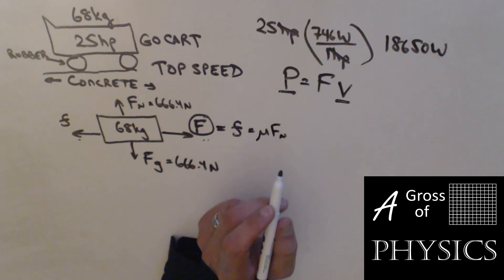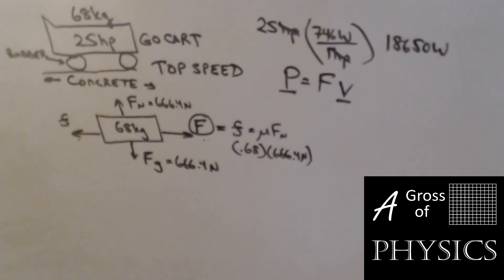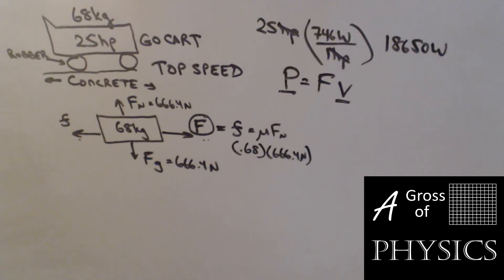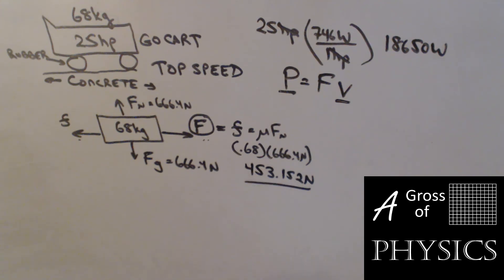The mu for rubber on concrete is 0.68. So I'm going to have 0.68 times 666.4. 0.68 times the answer I already had is 453.152 newtons. I probably went a little too precise with that, but that's what I wrote.